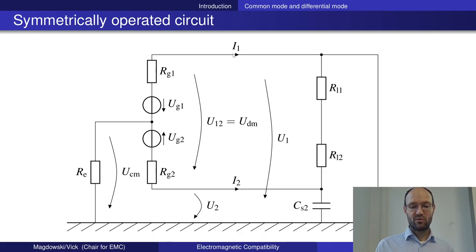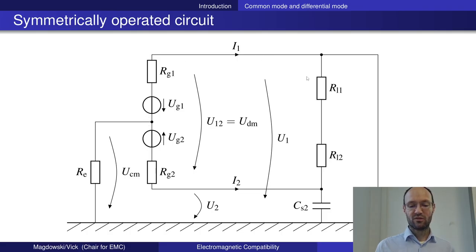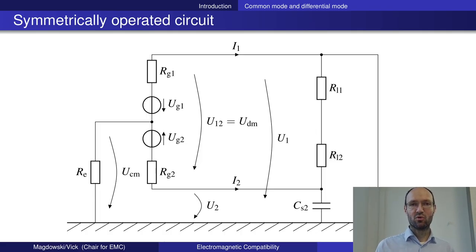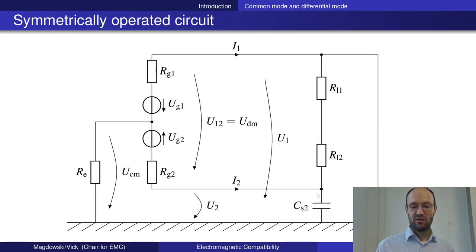We have a current on the forward conductor. Usually current should go this way, do its work in the load, and return on the return conductor. This is the usual loop of current that we would like to have. Unfortunately, because we don't live in a perfect world, there will be parasitic stray capacitances between the wires and the ground. We might have a capacitance between the return conductor and ground, between the forward conductor and ground, and so on.